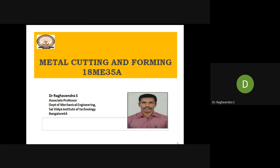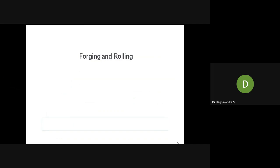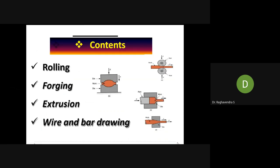Dear students, today we will talk about one more topic in metal cutting and forming — that is forging and rolling. The contents include rolling, forging, extrusion, and wire bar and wire drawing. From the figure, you can see what exactly rolling, forging, extrusion, and wire drawing all involve.